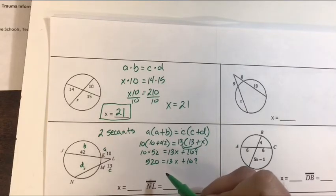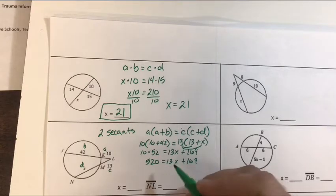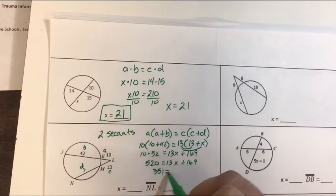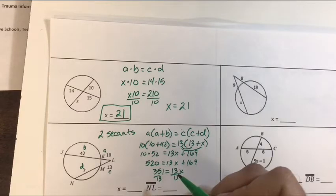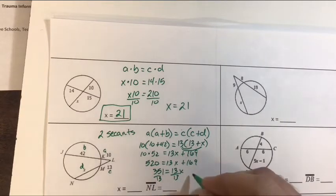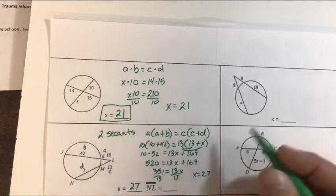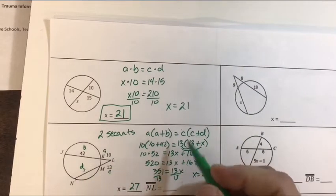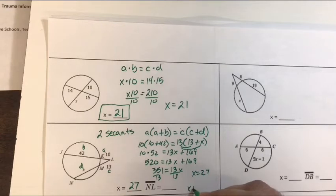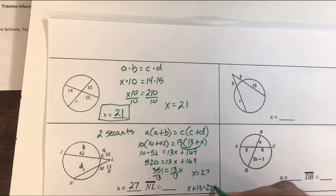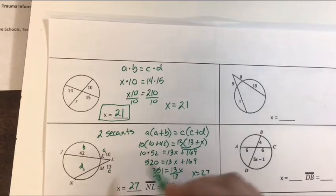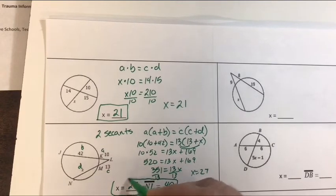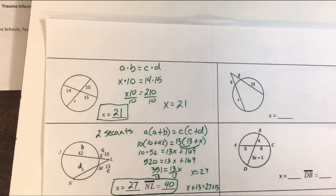We keep solving through that. Subtracting 169 from both sides, we get 351 equals 13X, and divide by 13, we get X is 27. But they also want the length of NL. Well NL is that X value plus 13, so that becomes 27 plus 13, which is 40. And that's how we find those answers. So a lot of this lesson is just setting up the right equation and solving that equation.